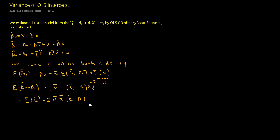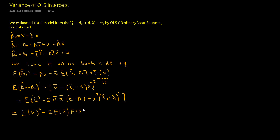...minus 2 times u bar multiplied by x bar multiplied by beta 1 hat minus beta 1, plus x bar squared times beta 1 hat minus beta 1 squared. If we take the expected value of each variable inside our bracket, we get: expected value of u bar squared, minus 2 x bar times expected value of beta 1 hat minus beta 1, plus x bar squared times expected value of beta 1 hat minus beta 1 squared.